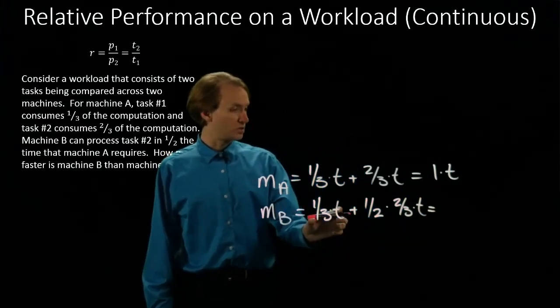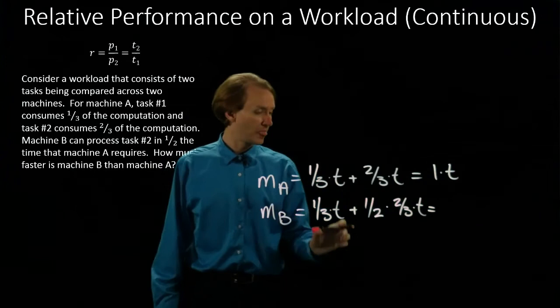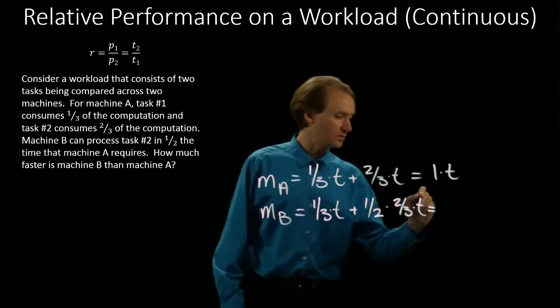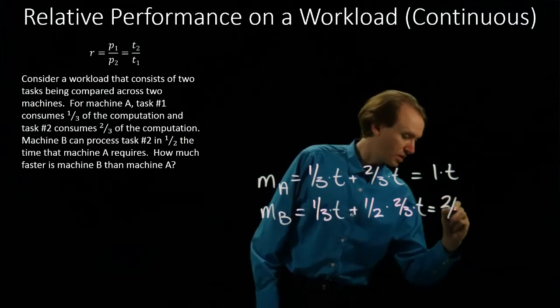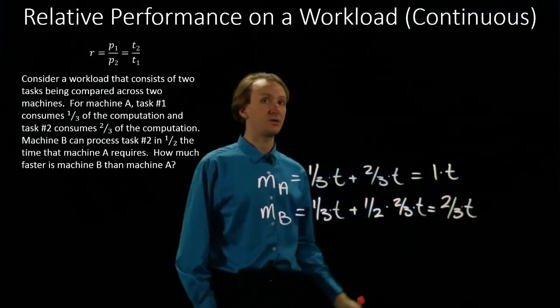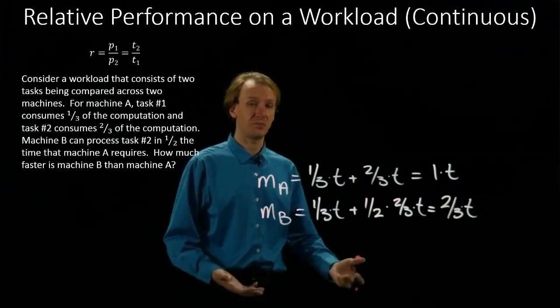So I have one-third of this time, plus half of two-thirds, which is one-third. Add those together, and I get a total of two-thirds of this amount of time that it took machine A to run the same amount of work.